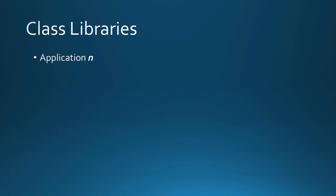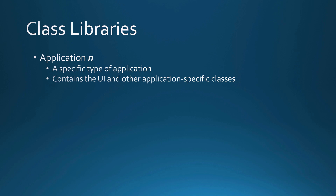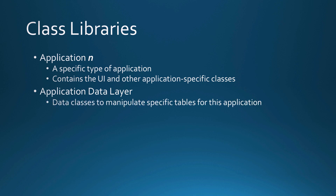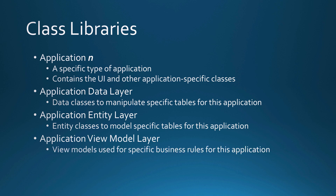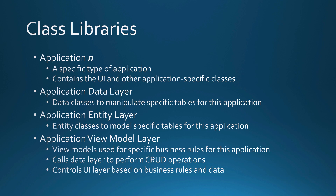At the application layer, each application is a specific type. The EXE or DLL contains the UI and other application-specific classes, plus its own data layer for manipulating specific tables, its own entity layer to model those tables, and its own view model layer for specific business rules. It calls the data layer for CRUD operations and controls the UI for that specific application. Each of these application libraries can also call the other libraries — from common all the way to the company data layer, company entity layer, and so on.